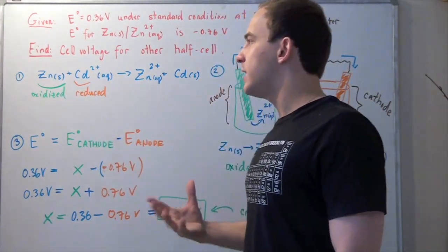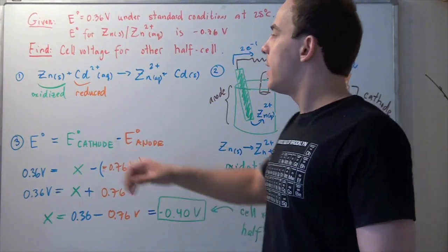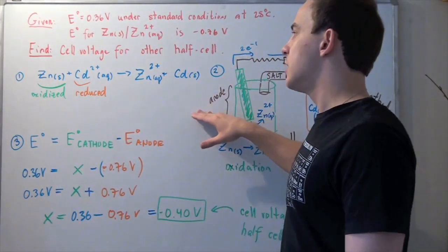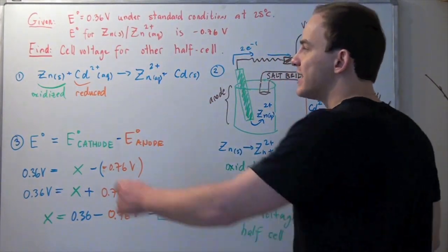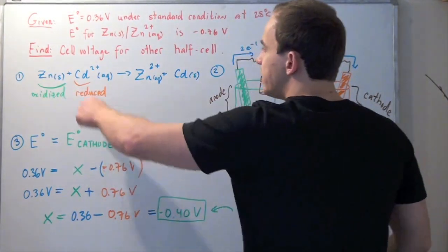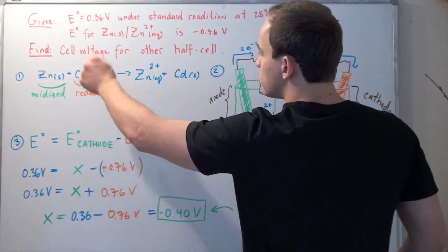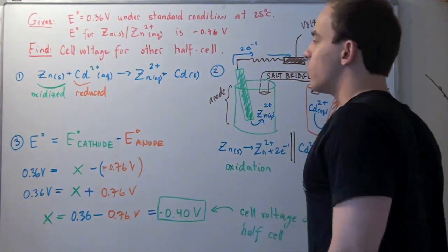In the first step, we begin by writing the redox reaction for the entire process. Solid zinc reacts with cadmium ion to produce aqueous zinc and solid cadmium.